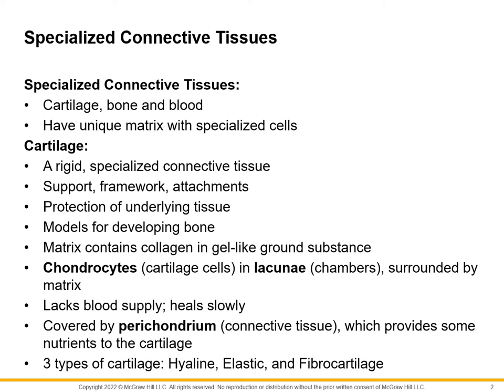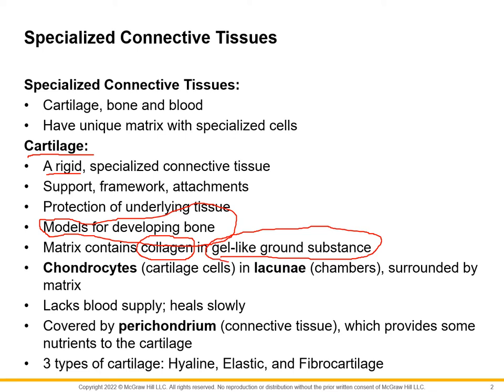Specialized connective tissue is kind of different in a lot of ways, mainly because of the way the matrix or the ground substance is. So cartilage is the first one we look at. It has a relatively rigid type of connective tissue, but it varies a little bit. It is for support framework and attachments. It is what our bones actually start off as. The matrix of it is collagen fibers, but it's in a gel-like ground substance. It's very plastic or rubbery — it's very unique.